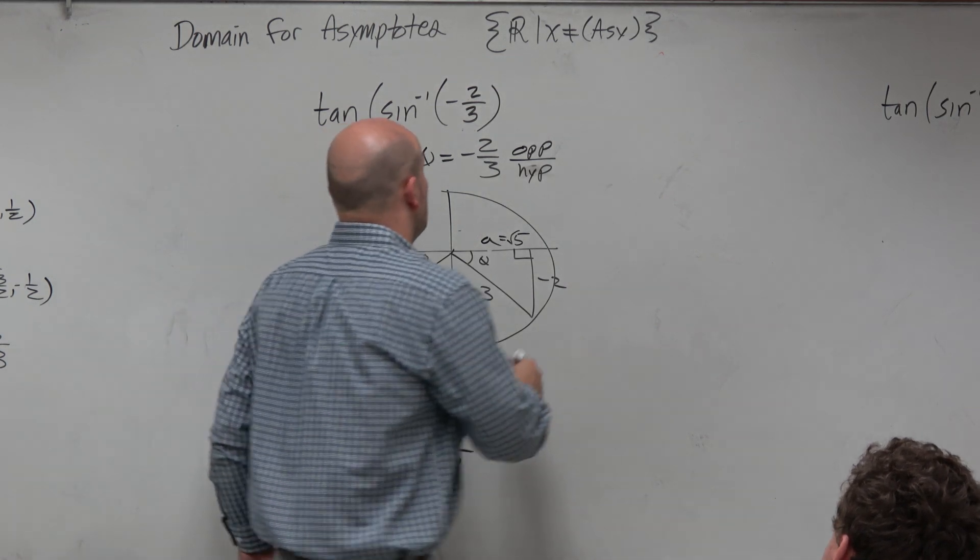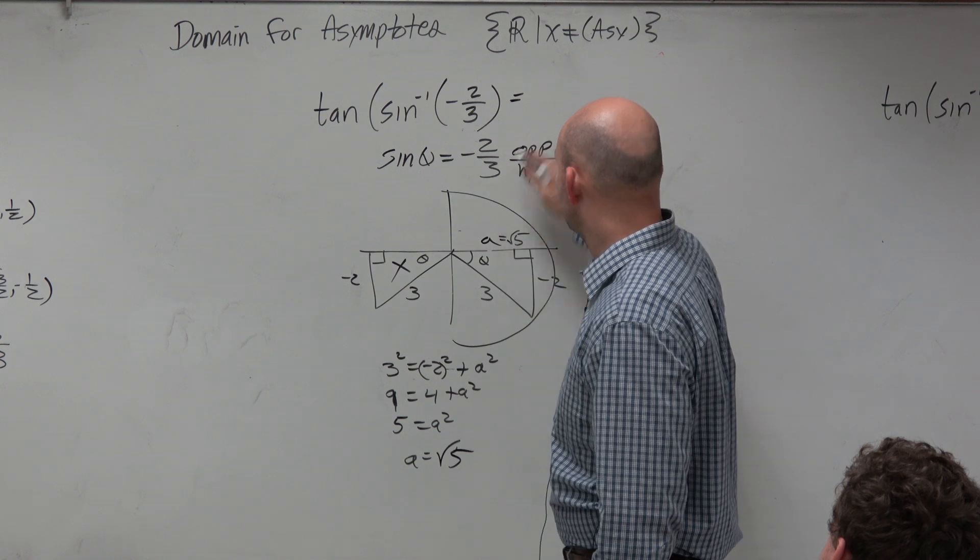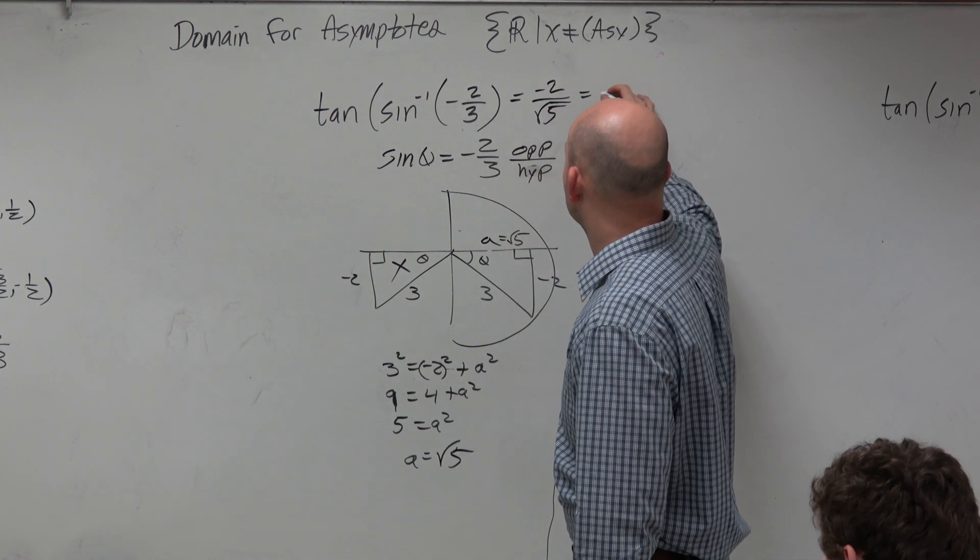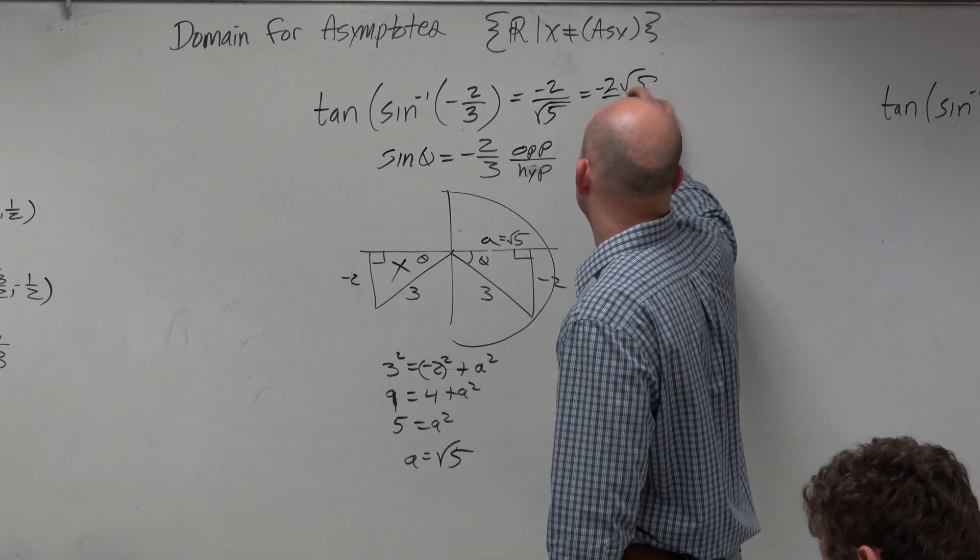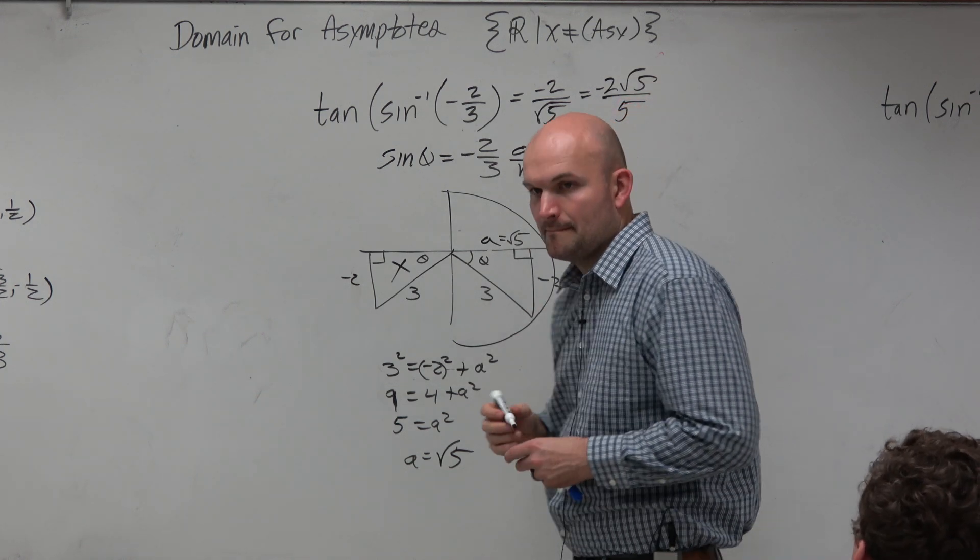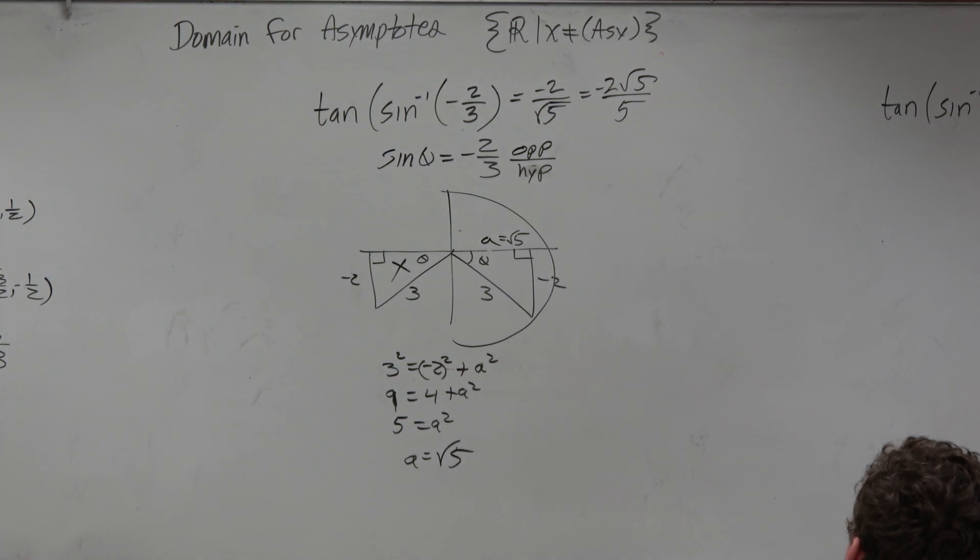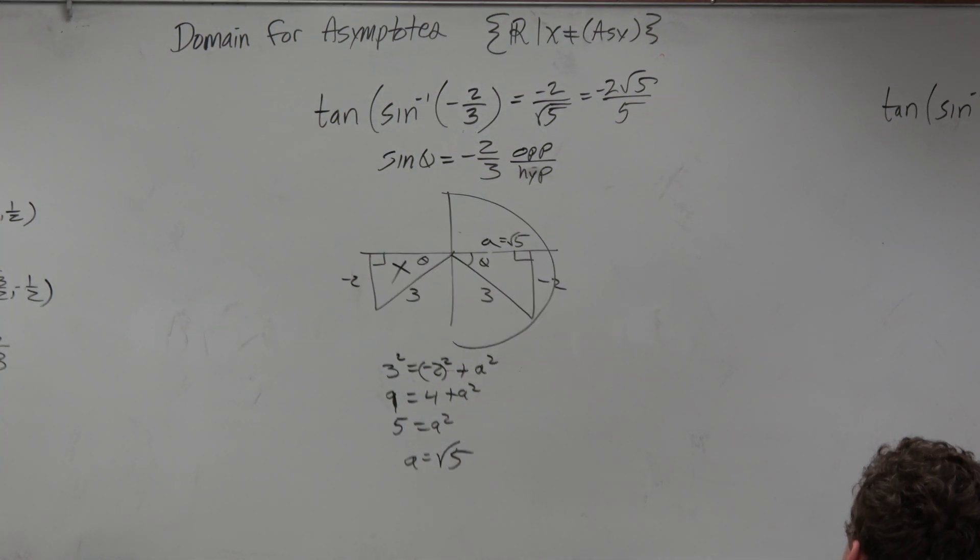So this answer is opposite over adjacent, negative 2 over square root of 5. Or as a simplified radical, like that. OK, now I'm getting short on time.